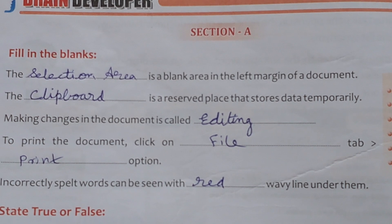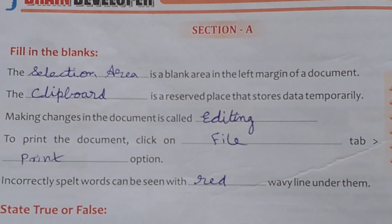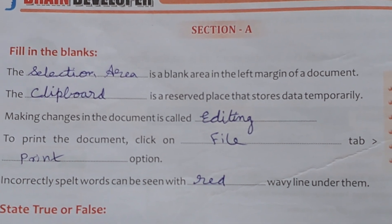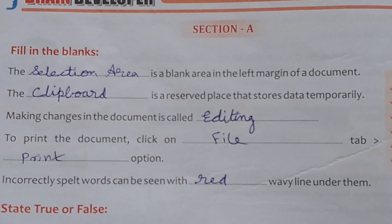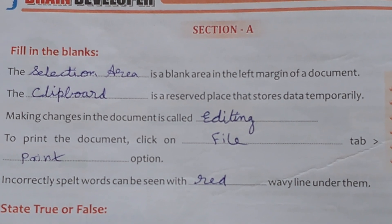Fifth one: Incorrectly spelt words can be seen with a blank wavy line under them. Answer is Red — red wavy line.